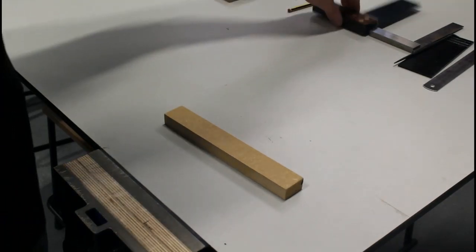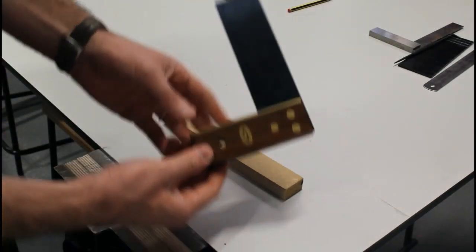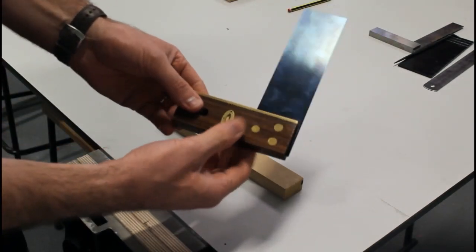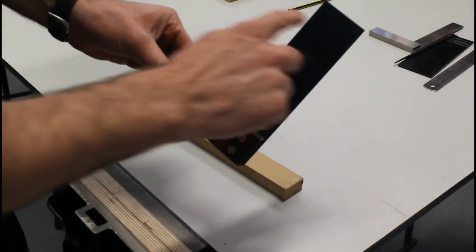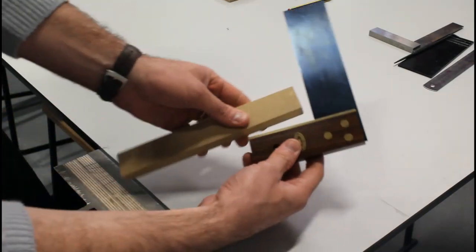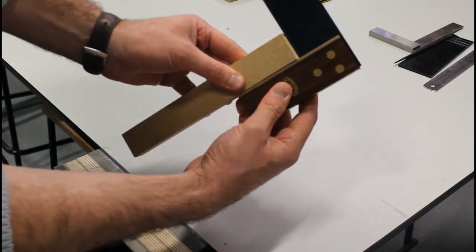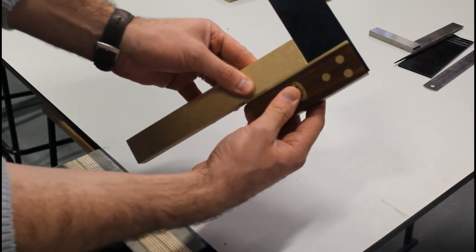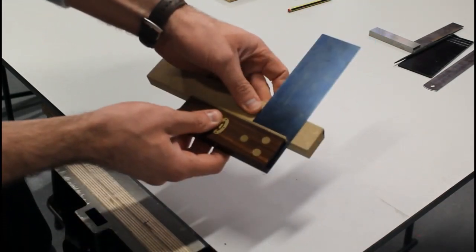When we're dealing with wood, we tend to use our tri-square, very similar makeup to an engineer's square. We have a stock and we have a blade, and that is a true 90 degrees. So we can check our material that it's square or 90 degrees perpendicular, and we can use it for marking out.